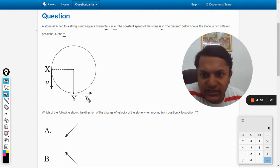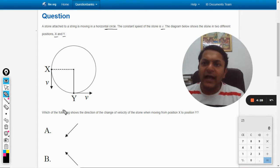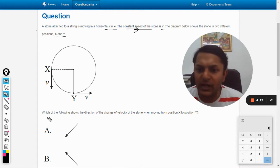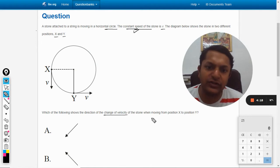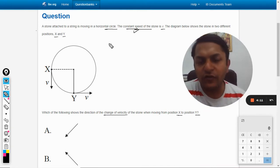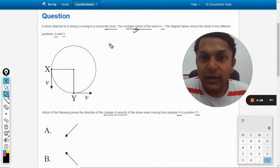Let's see, these are the two positions. They have said that the stone is moving at constant speed. Which of the following shows the direction of change of velocity of the stone when moving from position X to position Y? So we need to find the change of velocity.